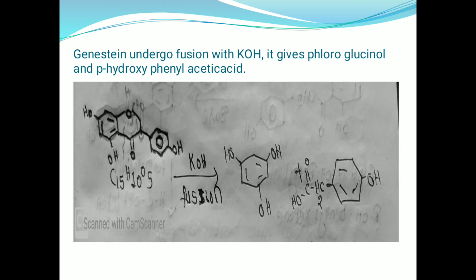Genistein undergoes fusion with KOH. The molecular formula of genistein is C15H10O5. Upon fusion with KOH, it gives two products: the first is phloroglucinol and the second is para-hydroxyphenylacetic acid.